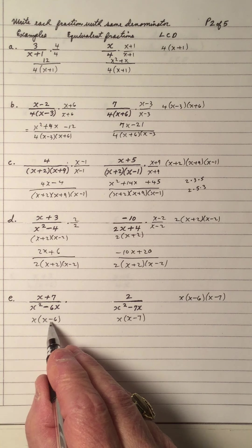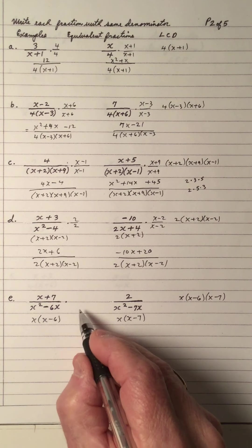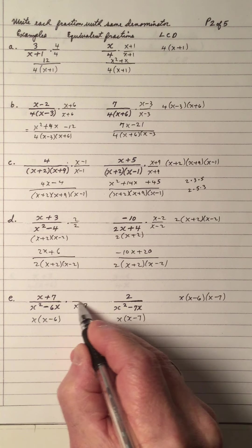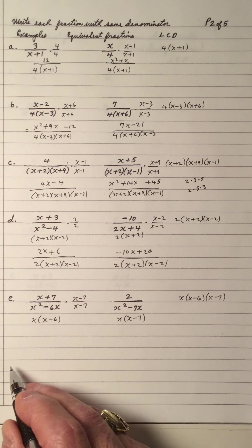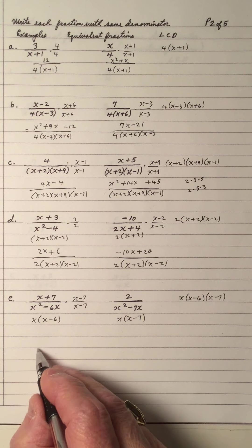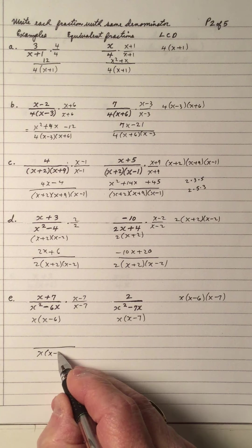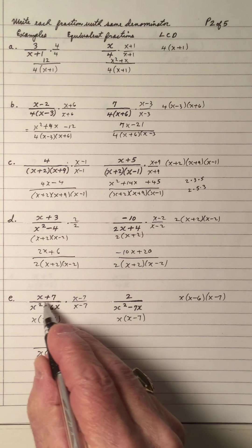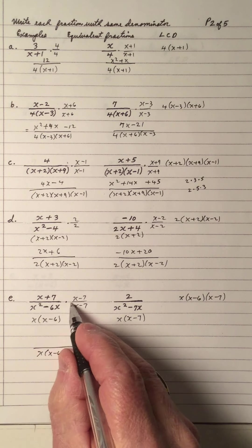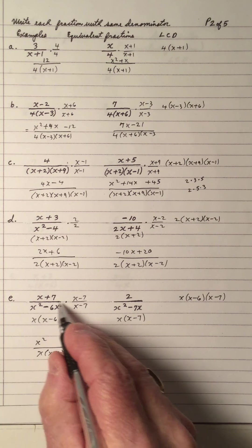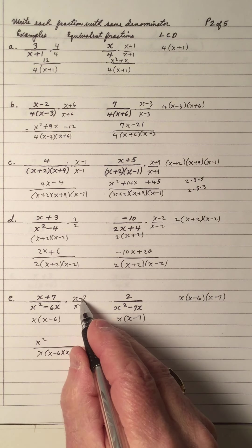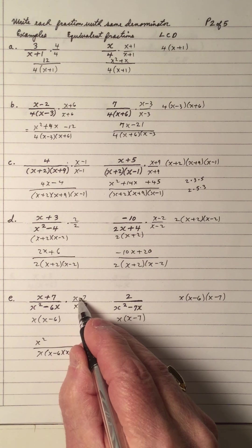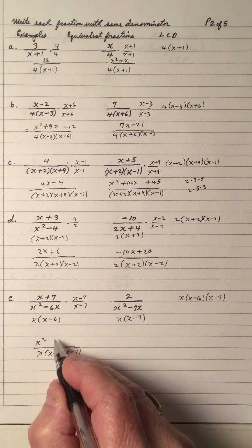So I have to factor them to pick up the LCD. What do I multiply x times x minus 6 to give me this? I need an x minus 7, top and bottom. So that gives me this denominator again. Multiply: x times x is x squared. And notice that the outside is negative 7 and the inside is positive 7 — that's a 0.